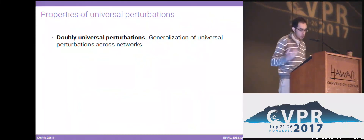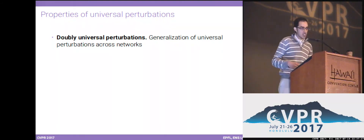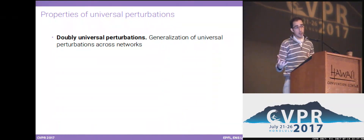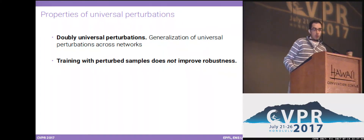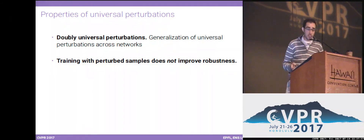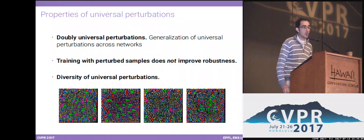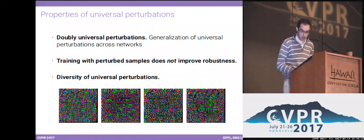One fundamental property of universal perturbations is that they generalize well across different neural networks. If you compute a universal perturbation for one specific network and try it on another, it will again fool most images on the other network. Unfortunately, data augmentation by generating universal perturbations and training on perturbed images does not improve robustness, or only very slightly. The reason is that universal perturbations are extremely diverse — there is no single universal perturbation such that being robust to it solves the problem; there are many of them.